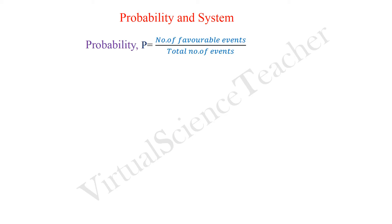Let's recapitulate about probability. Probability is the number of favorable events divided by the total number of events. I think you all know this famous equation.